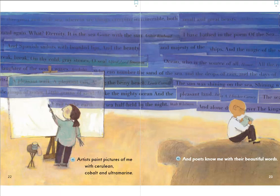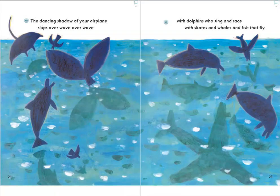Artists paint pictures of me with cerulean, cobalt, and ultramarine. And poets know me with their beautiful words: 'The dancing shadow of your airplane skips over wave over wave, with dolphins who sing and race, with skates and whales and fish that fly.'